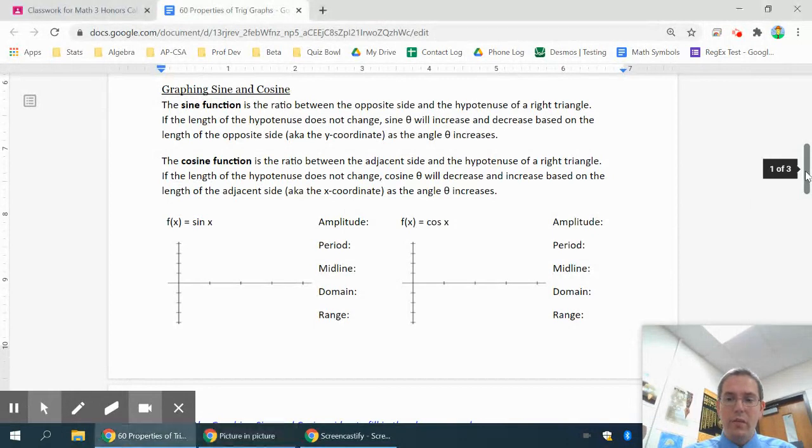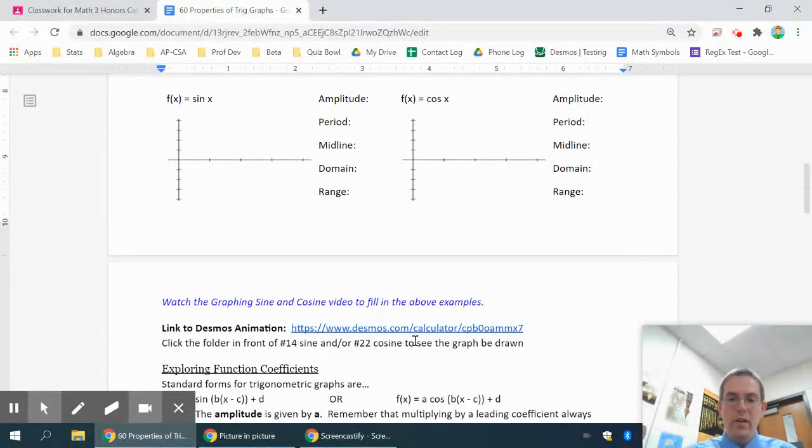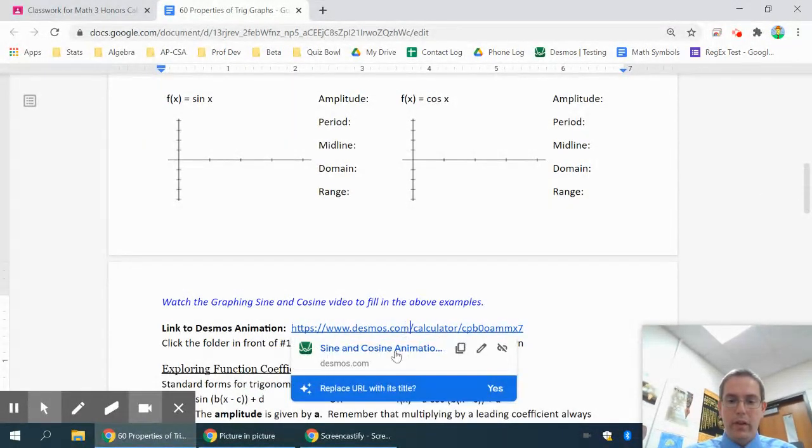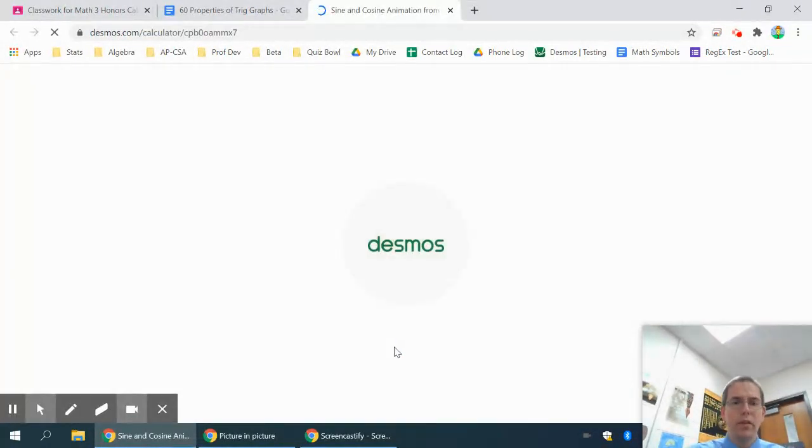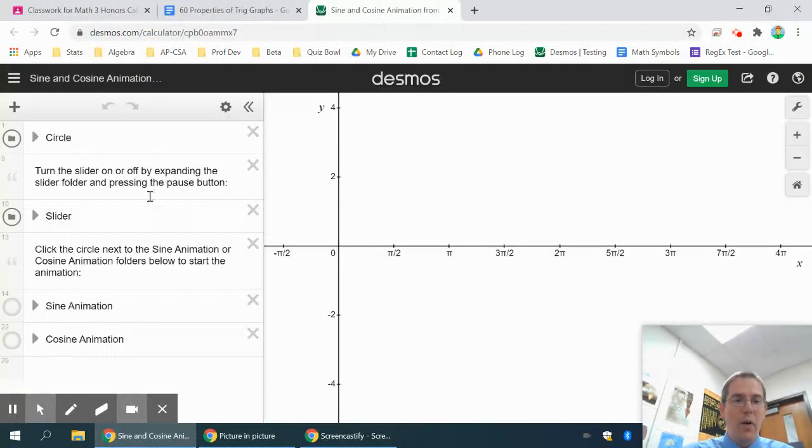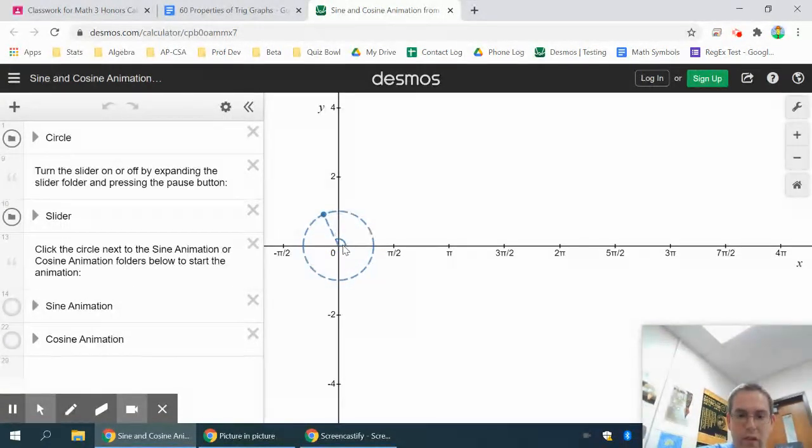I have a video animation linked here that you can explore on your own, but we'll look at it together. This animation will show us a sine graph as the angle changes. You can see the angle marked in blue in the middle of the screen—that's the value of theta going around from 0 to 2π, and then a second time from 2π to 4π, two complete revolutions.